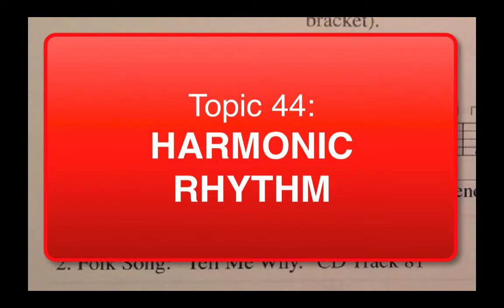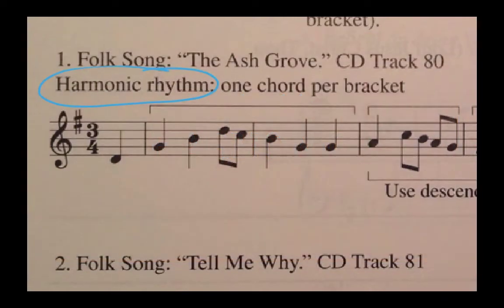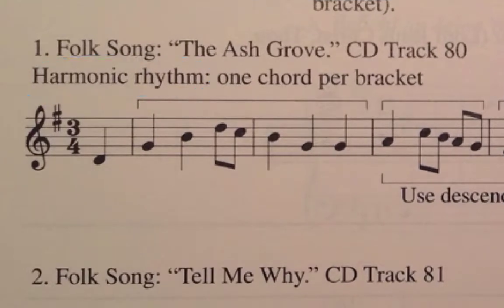Another theme of this unit on chord progressions is harmonic rhythm. The idea of harmonic rhythm suggests that the chords change at a certain rhythmic duration. In folk music, often that duration is the length of the measure. So, for instance, in this folk song — in 3/4 time, which means every 3 beats we have a new measure — often in folk music, every 3 beats we also have a new chord.